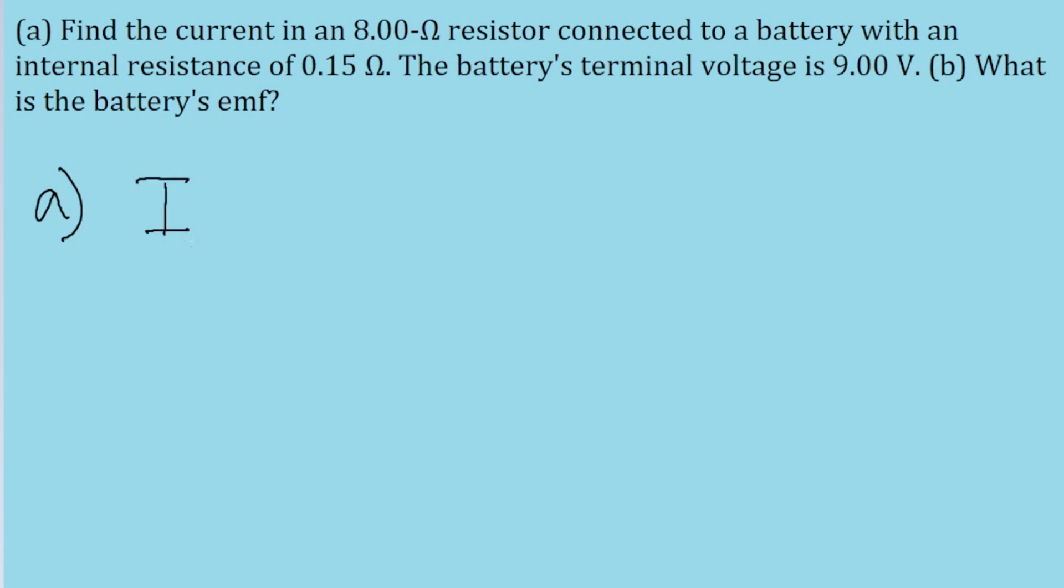Because we're looking for the current through the resistor, we can ignore the battery's internal resistance and just use Ohm's law, which states that the current is equal to the potential difference divided by the resistance.